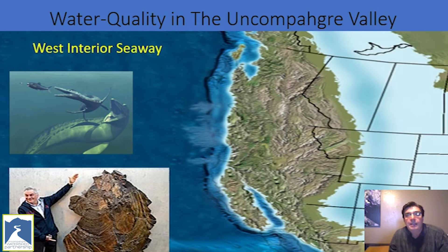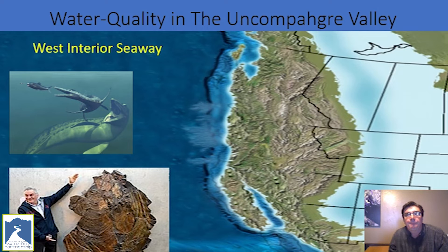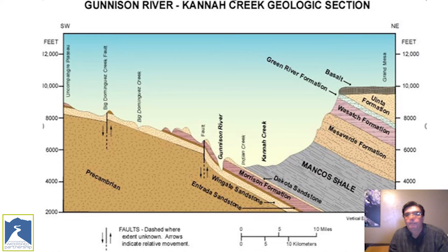So where do salinity and selenium come from? They come from the ground — they occur naturally in all geologic formations, but the most notorious for salinity and selenium is the Mancos Shale. This formation formed as part of the Western Interior Seaway in what is now the state of Colorado, which was previously underwater. When the seaway eventually dried up, what was left was highly concentrated sediments that were high in salinity and selenium. As shown by the geologic cross section here, the Mancos Shale formation covers a large part of the lower Uncompahgre Valley between Montrose and Delta, Colorado, and is over 5,000 feet thick in some areas.